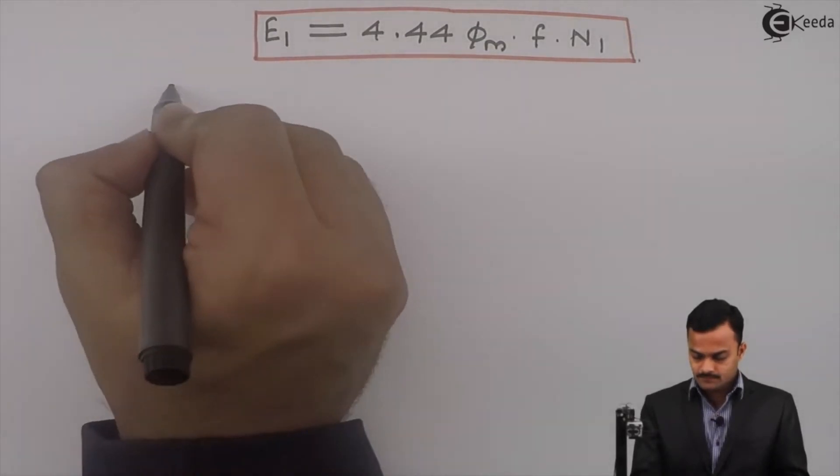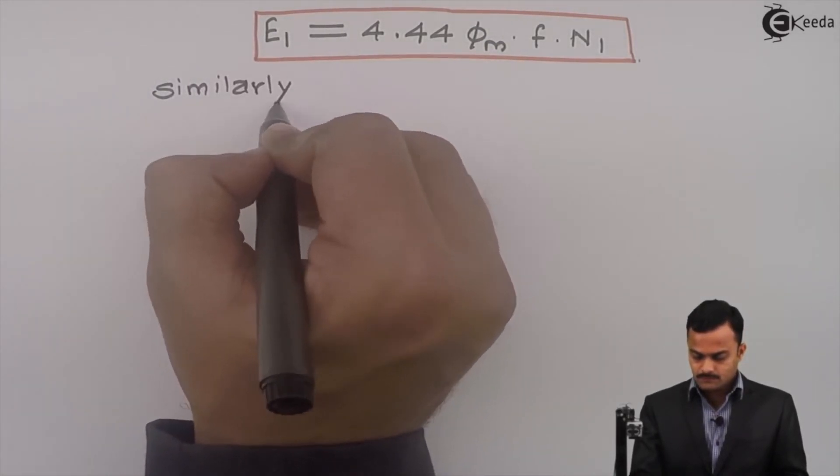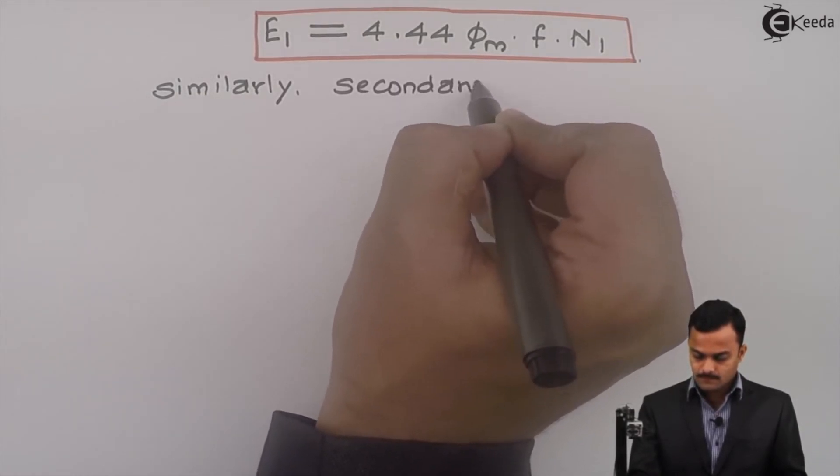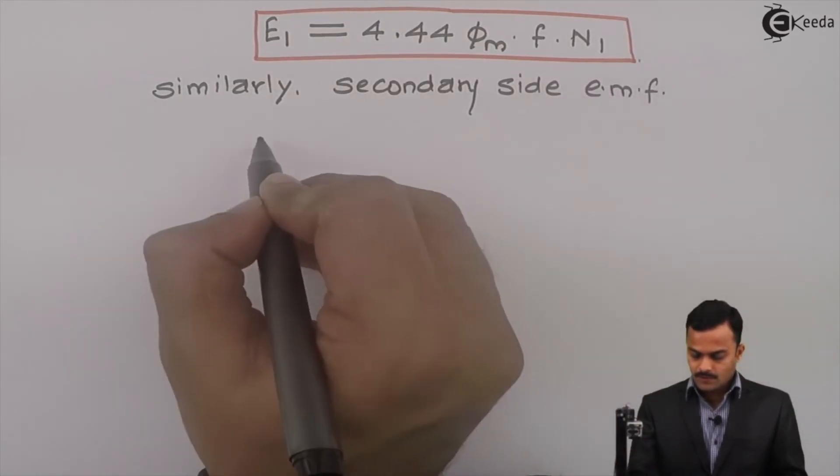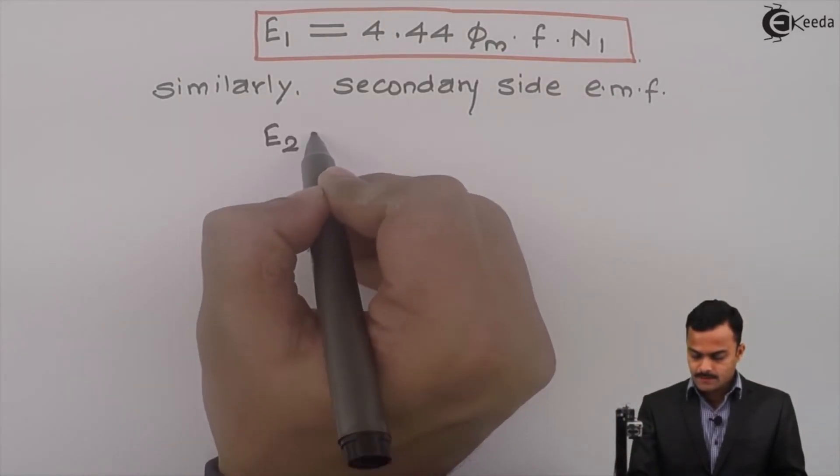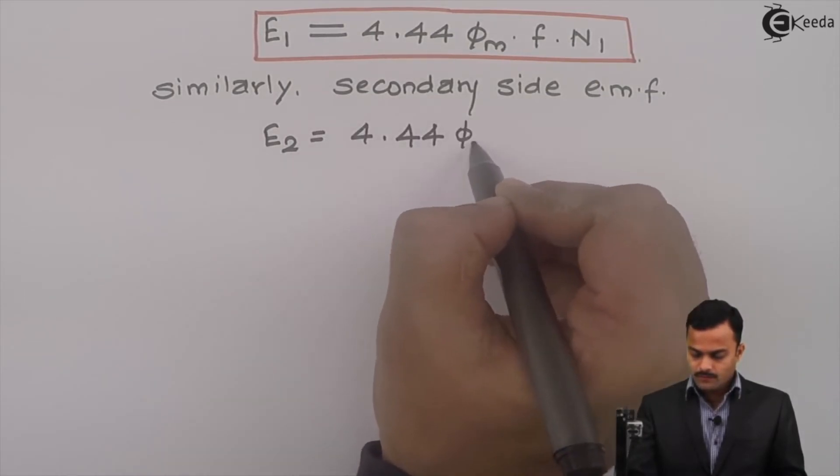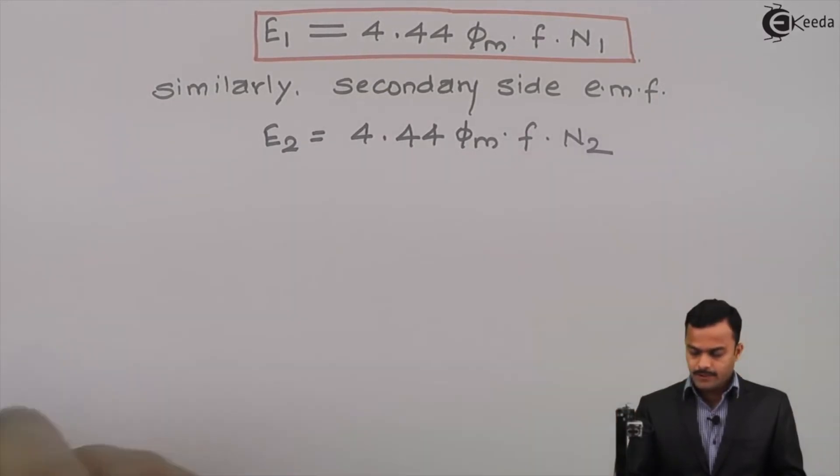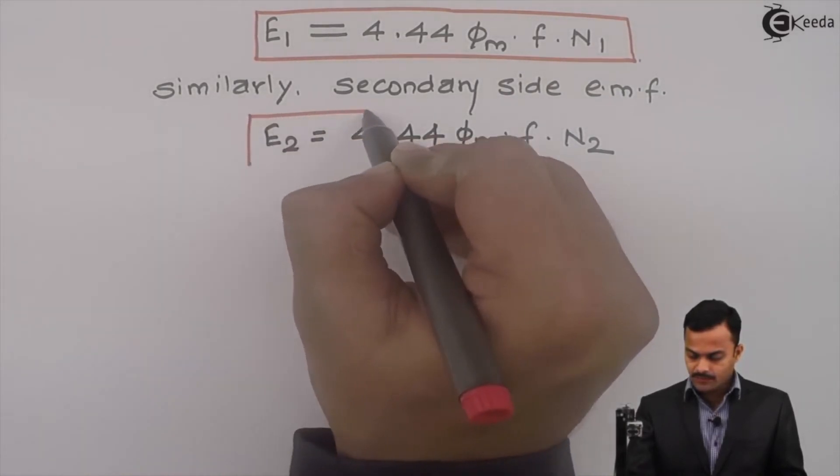Similarly, secondary side EMF E2 equal to 4.44 phi m f into n2.